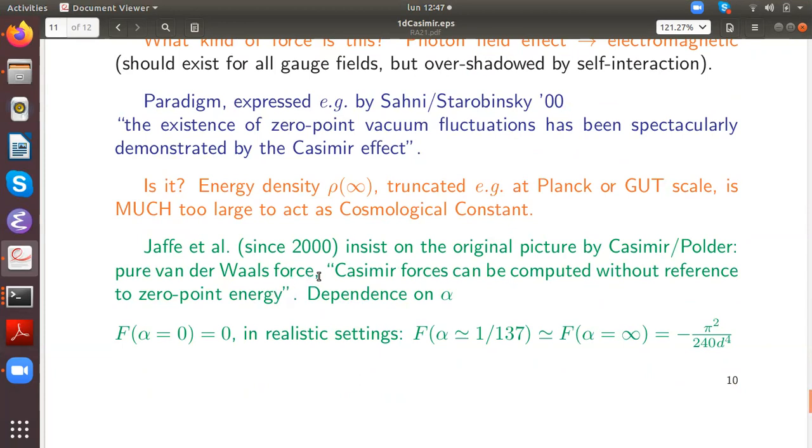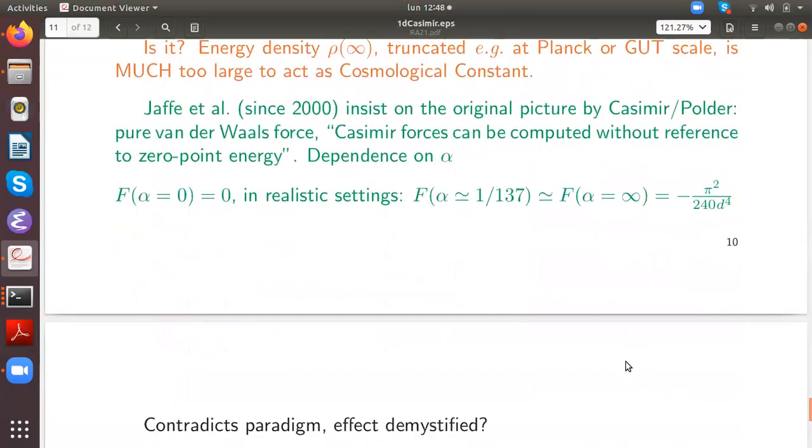For instance, this should also depend on the coupling alpha, which did not appear in our derivation before. And then Jaffe shows that for alpha equals zero, force must be zero of course. And in the realistic settings of the experiments, the physical value gives a force which is very similar to the force at alpha infinity, which then corresponds to the calculation that we have before. So we cannot distinguish them experimentally with the precision given. And this is an exceptional case that even alpha infinity leads to a finite force in this case.